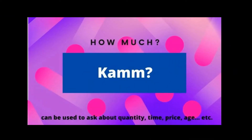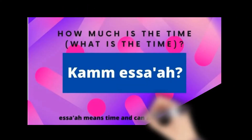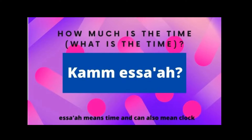Next, 'how much' — we say 'cam'. This can be used whenever you want to ask about quantity, time, price, or someone's age. When you want to say 'what is the time', in Arabic it literally means 'how much is the time', so we say 'cam is-saa'a'. Please note that the word 'saa'a' means time, and can also be used as the word clock or watch. So 'cam is-saa'a' means 'what is the time'.